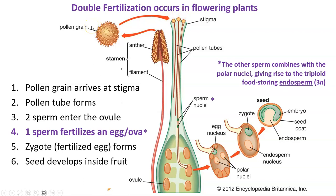If there's a compatible pollen on the stigma, then the pollen tube forms because of one of the nuclei from the pollen grain and its compatibility with the cells of the female plant. This then allows the two sperm from the pollen to enter the ovule.